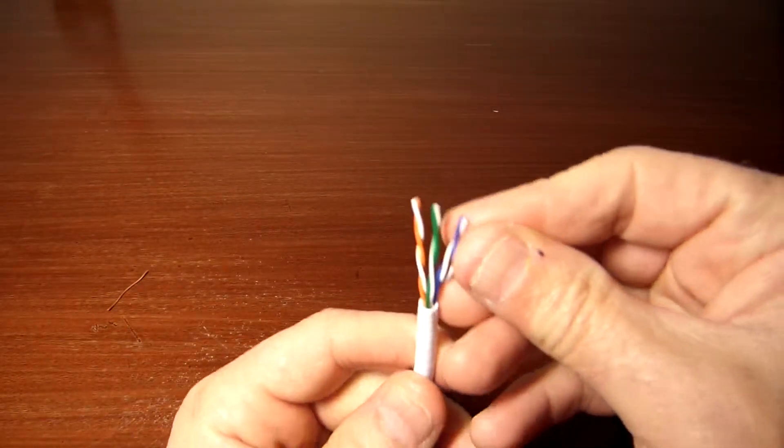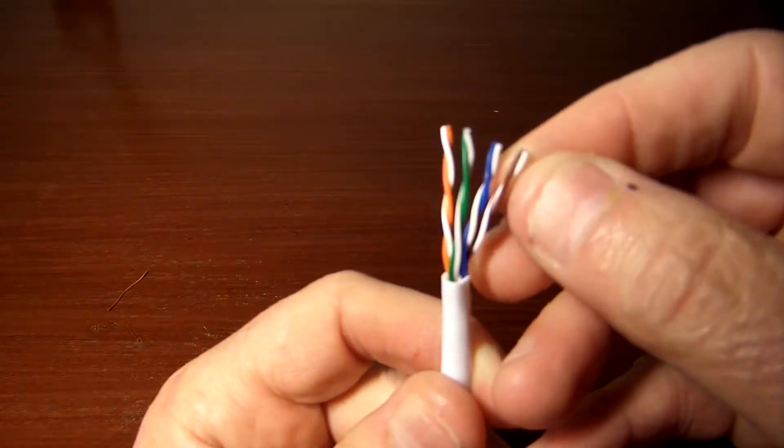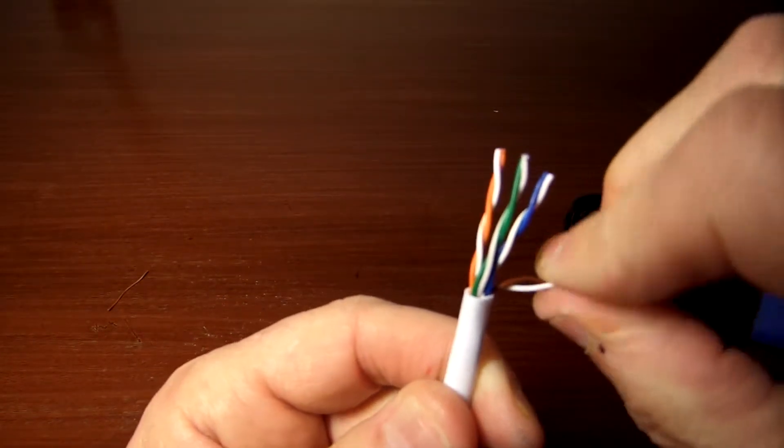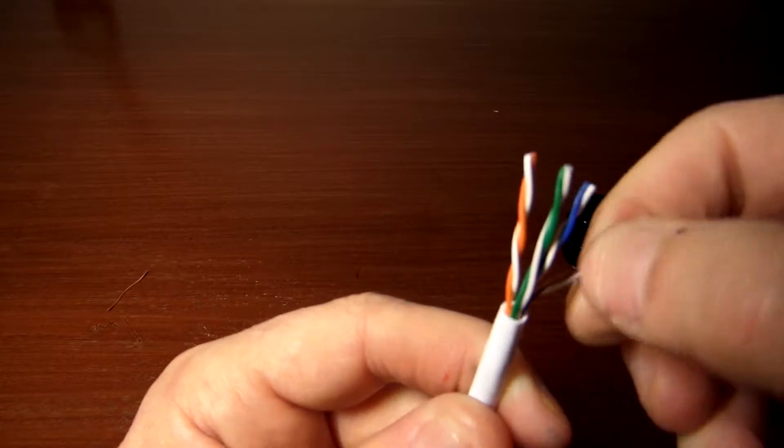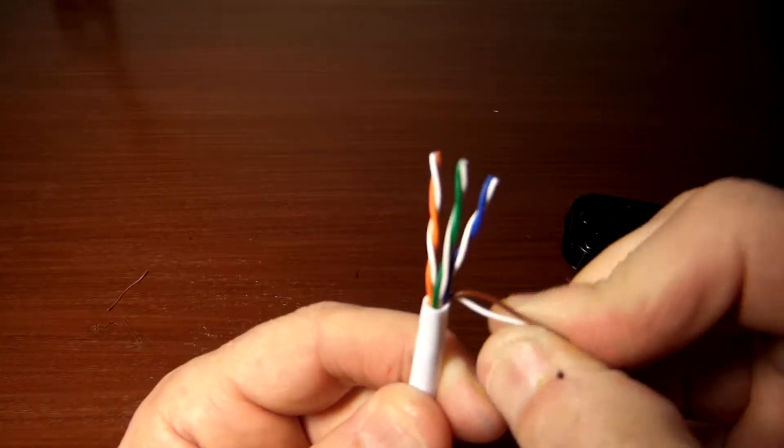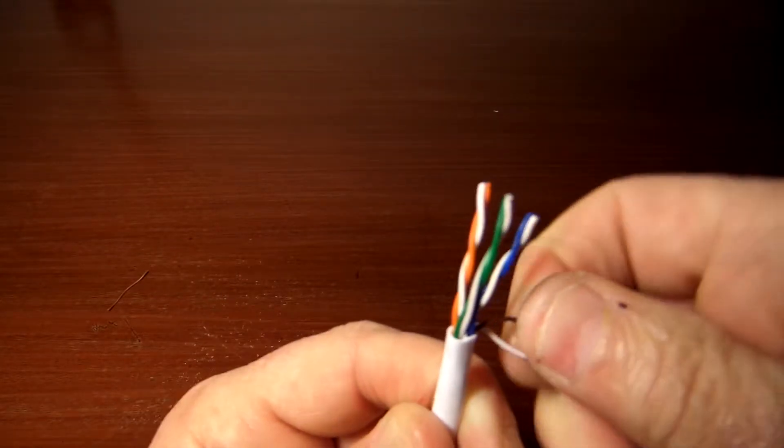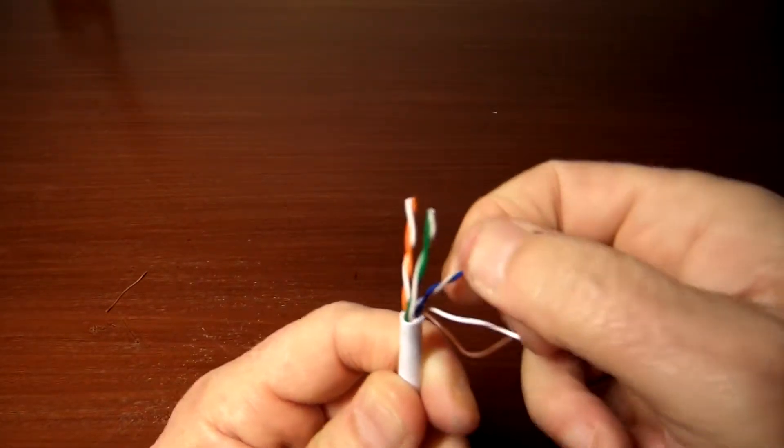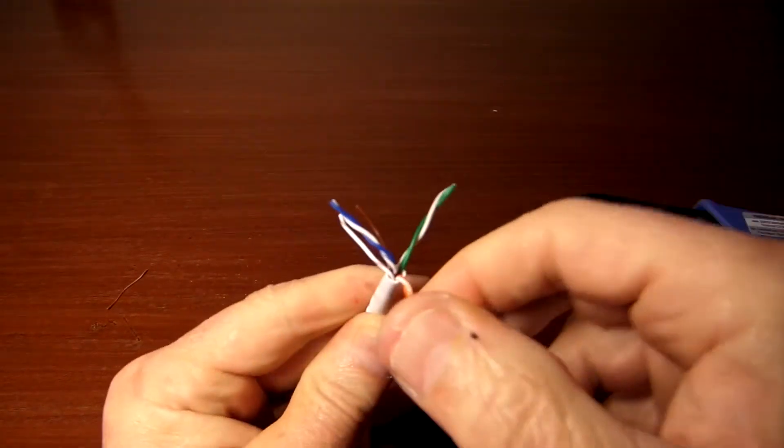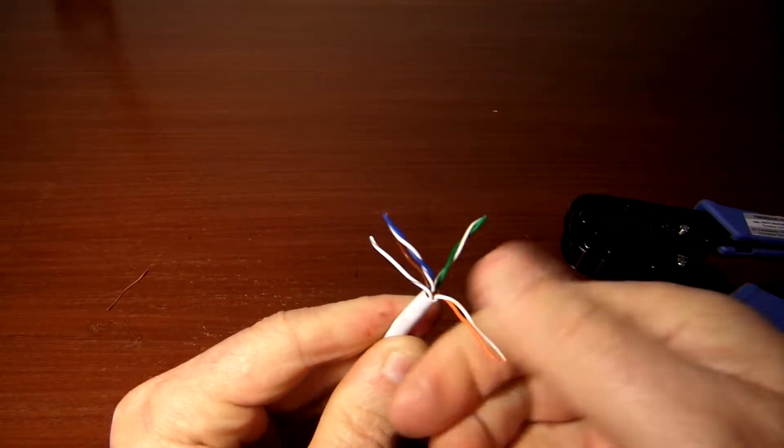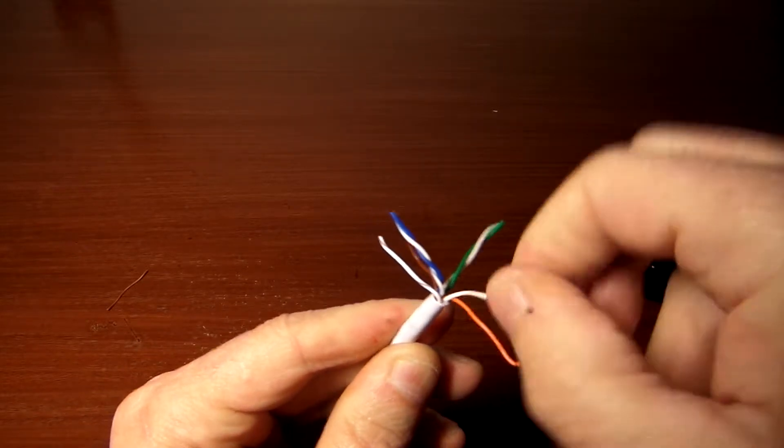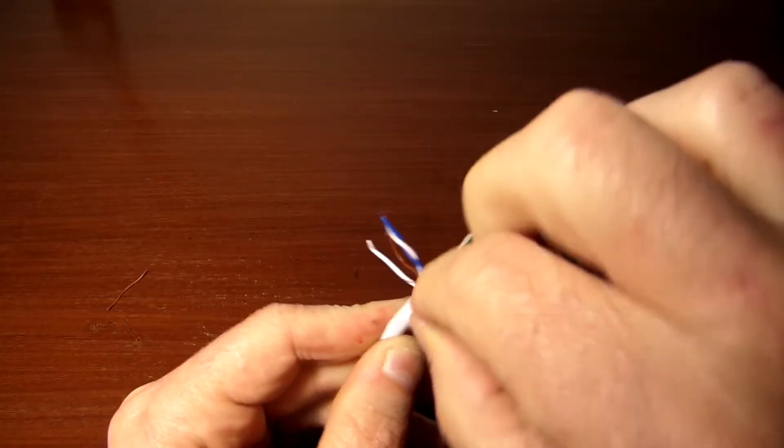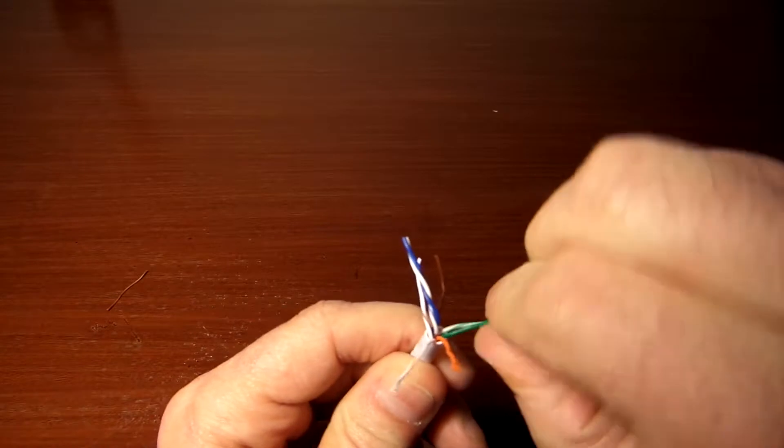With that out of the way, you want to start untwisting these pairs. There's brown and brown and white, blue and blue and white, green and green and white, and orange and orange and white. Just kind of move these in separate directions and you simply want to untwist those pairs and then try to straighten these out as much as possible.